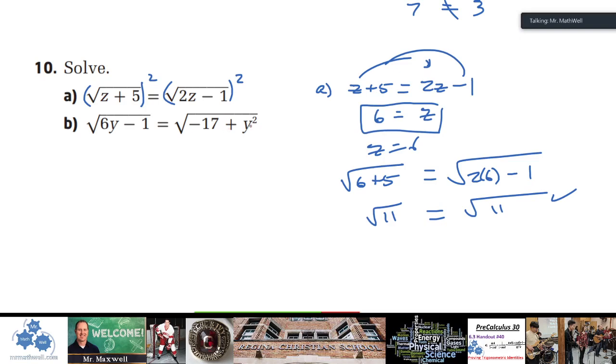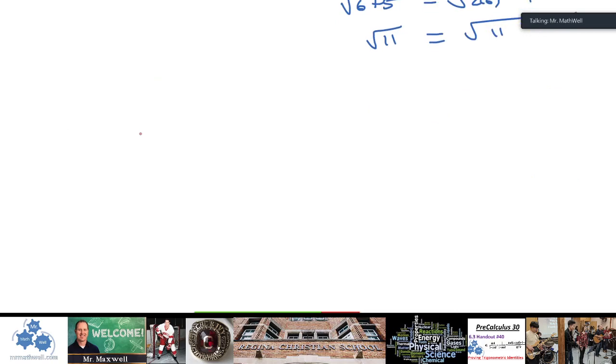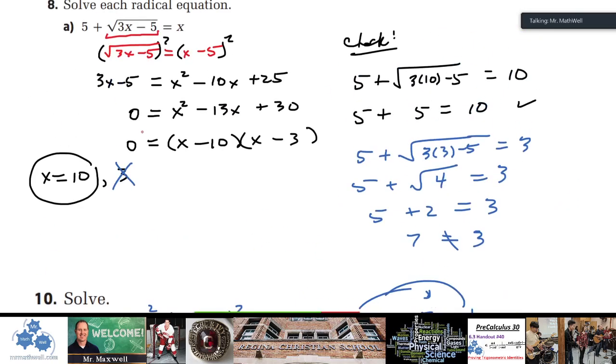Does that equal 6? All right. Now if you do the same thing for b, you realize that you're going to have a y² and a y term. So you're going to have a quadratic. You have to solve it that way. Okay. So there's just some samples, questions from your homework assignment.